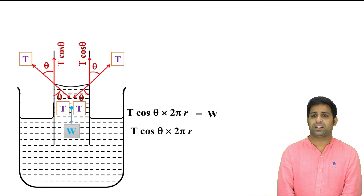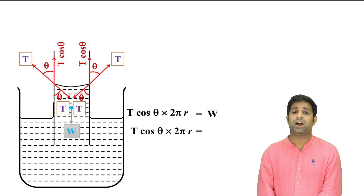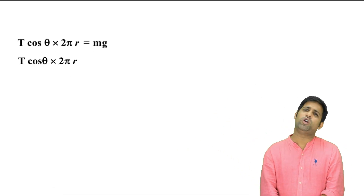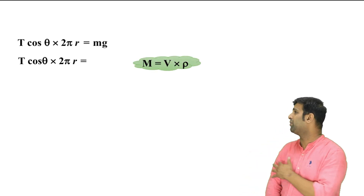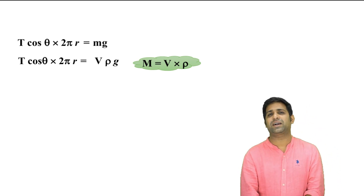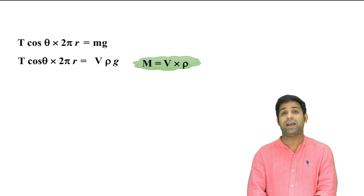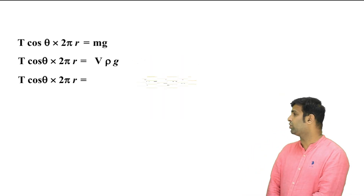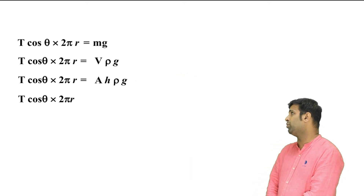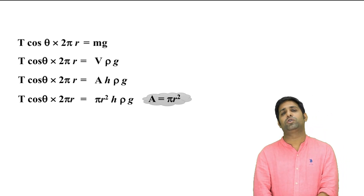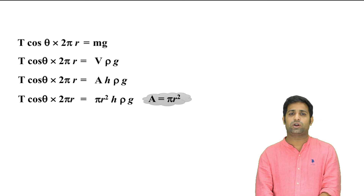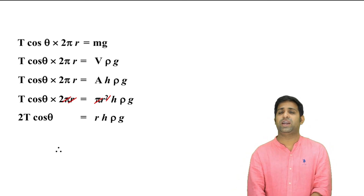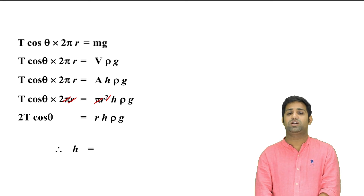Now we solve the equation. Setting upward force equal to weight: 2π T cos theta = mg. Mass equals volume times density, so mg = V × ρ × g. The volume of the cylindrical column is πr²h, so we write: 2π T cos theta = πr²h × ρg. Cancelling π on both sides and r, we get: h = 2T cos theta / (r × ρ × g).